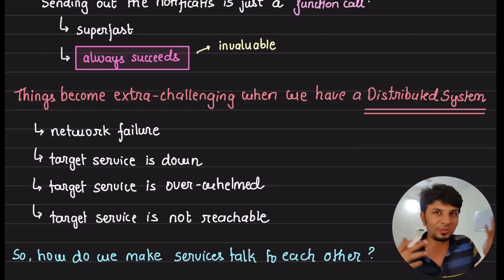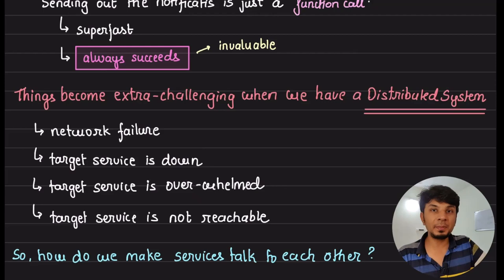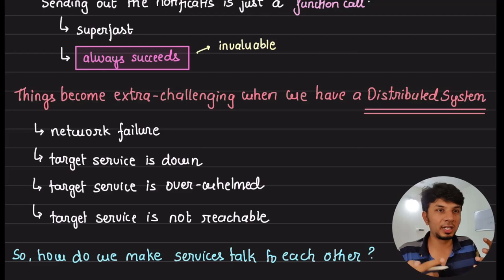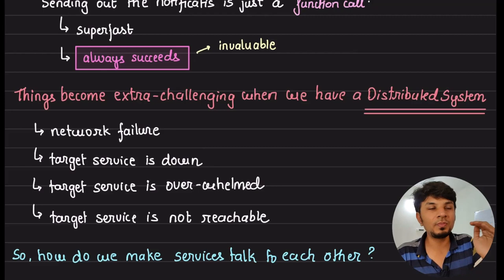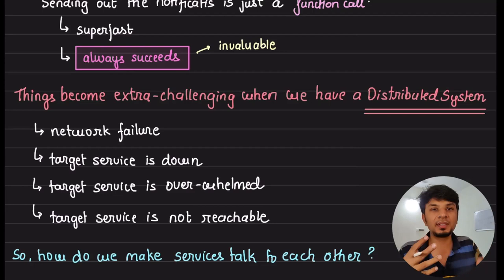Things become extra challenging in a distributed system because whatever could go wrong would go wrong. What might go wrong? There might be a network failure, your target notification service could be down, or it could be overwhelmed by requests and not respond quickly enough. Your target service might also not be reachable at all due to network partitioning, even if the service itself isn't down. So how do we make two services talk in a distributed setup?